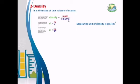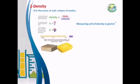Density is the second property we can use to distinguish between different objects, because each substance has its own density. For example, if we have two boxes with the same volume but made of different materials, they will have different masses — one is heavier than the other. Equal volumes of different substances have different masses because they have different densities.